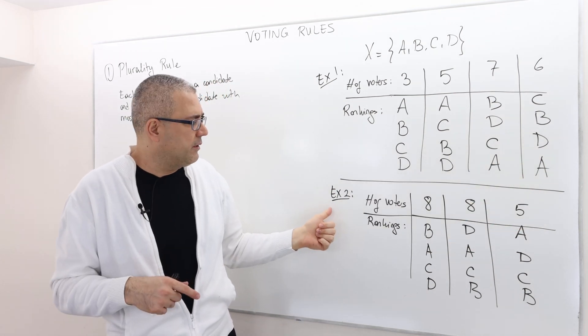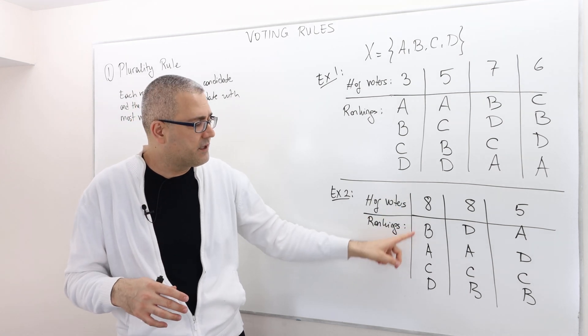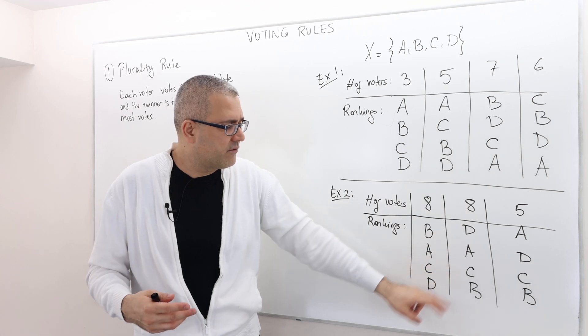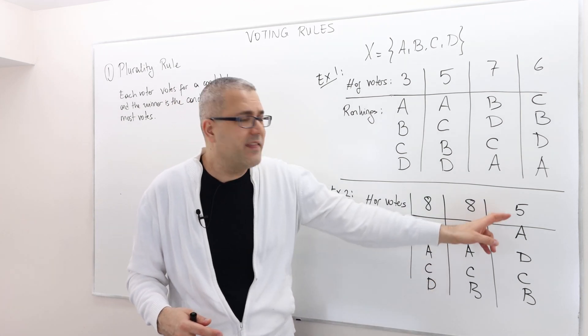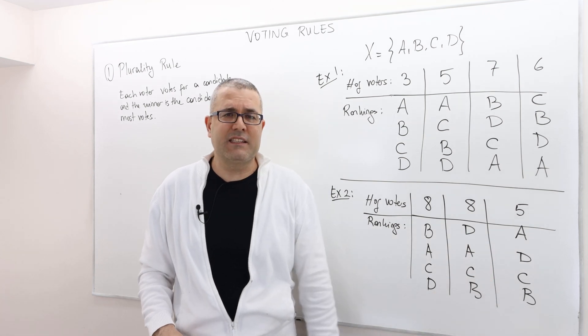In another example, in the second example, the eight candidates, I'm sorry, not candidates, eight voters rank the candidates this way, another eight voters rank the candidates that way, and then the remaining five voters rank the candidates this way.